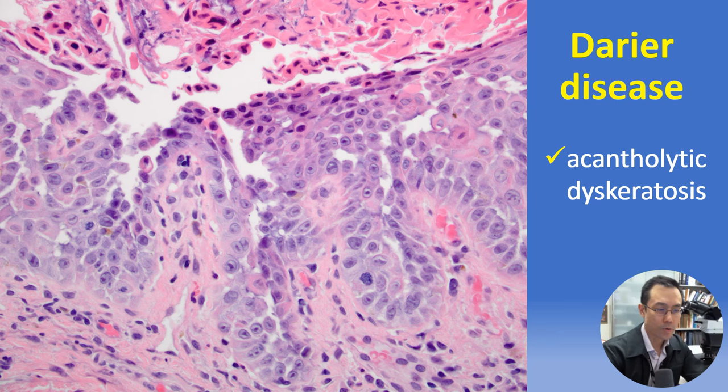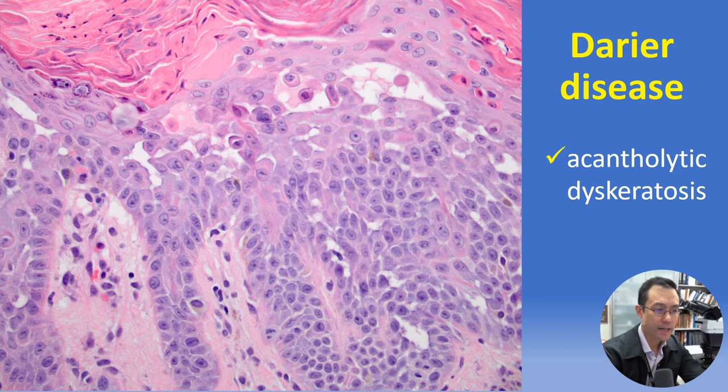Although acantholytic dyskeratosis tends to be suprabasilar, in this example it appears to be mostly intraspinous, but all still intraepidermal.